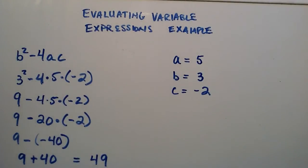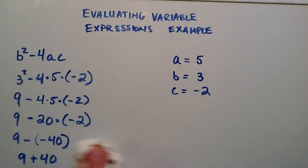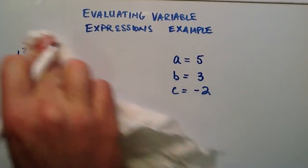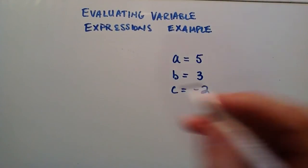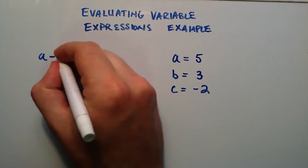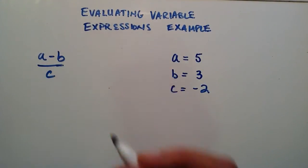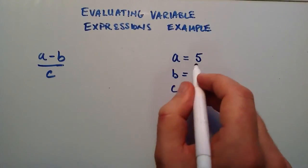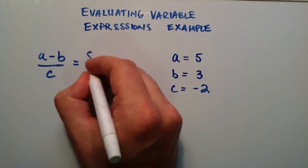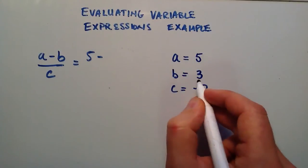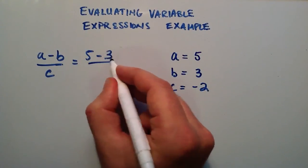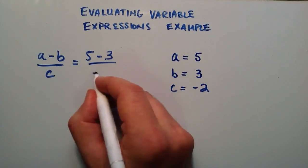So let's go ahead and do one more example on this. And for the second example we're going to do a minus b divided by c. So plugging in the value for a we have 5 minus b which is 3 divided by c which is negative 2.